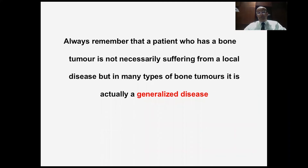We have to remember that a patient with a bone tumor is not necessarily suffering from a local disease, but in many types of bone tumors, it is actually a generalized disease. So he has a tumor in the bone, but also micrometastasis in the blood. If we think of him as having a localized disease and just treat his bone tumor, eventually he'll develop metastasis and die. So we have to treat him both locally and systemically.